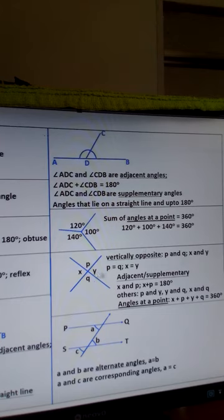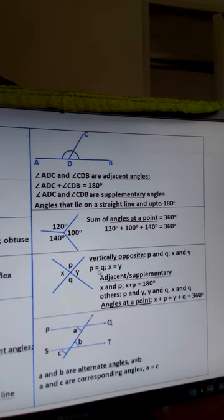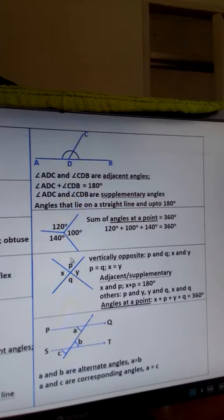Next is this diagram which shows vertically opposite angles. We have two lines which intersect at a point, forming angles X, P, Y, and Q. P and Q are vertically opposite angles, and X and Y are vertically opposite angles. Vertically opposite angles are equal, so P is equal to Q and X is equal to Y.